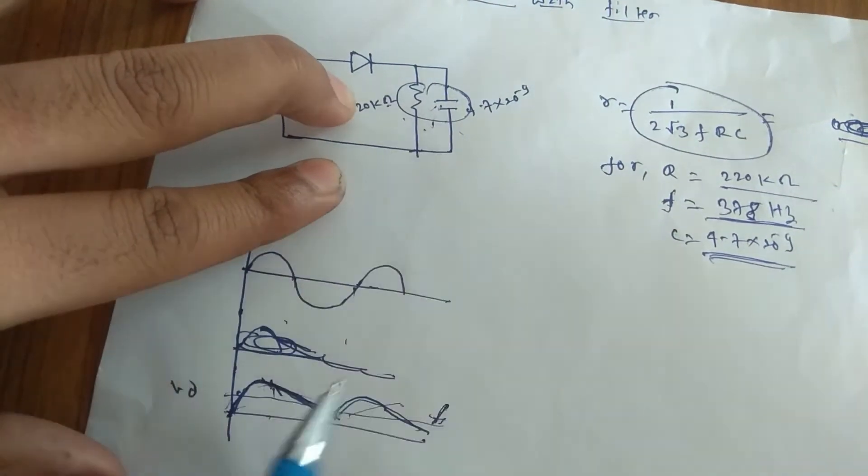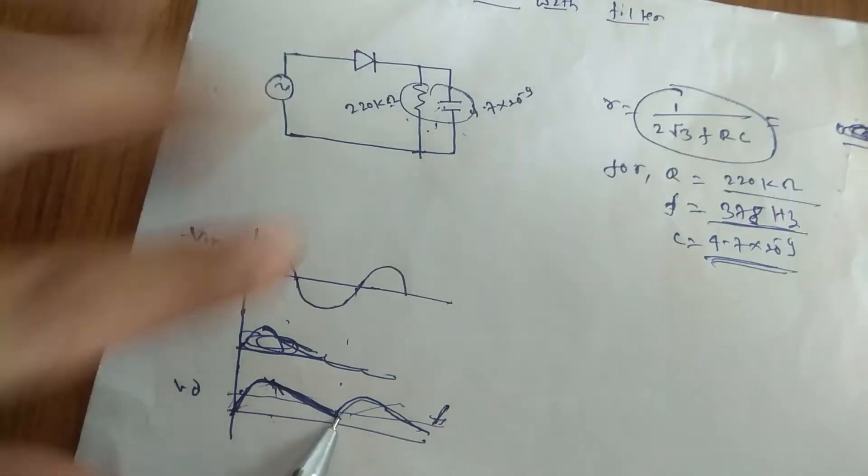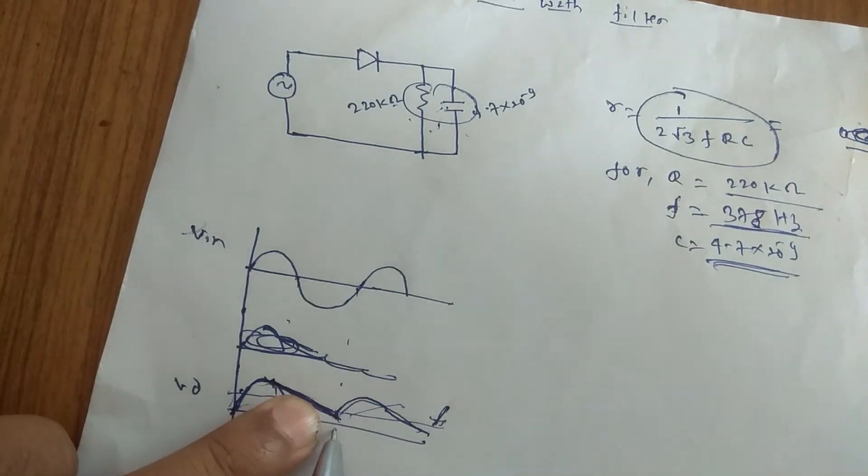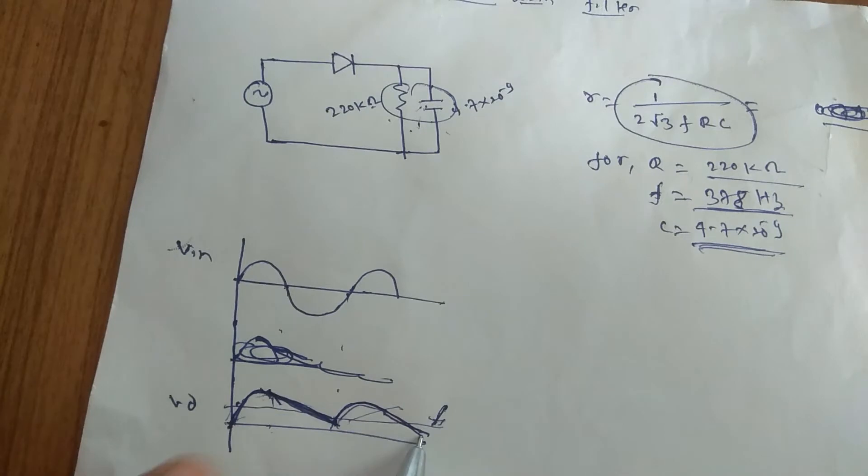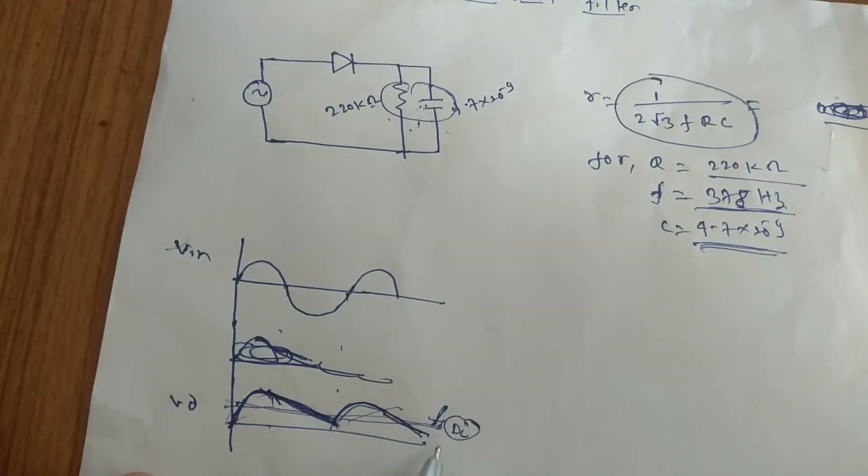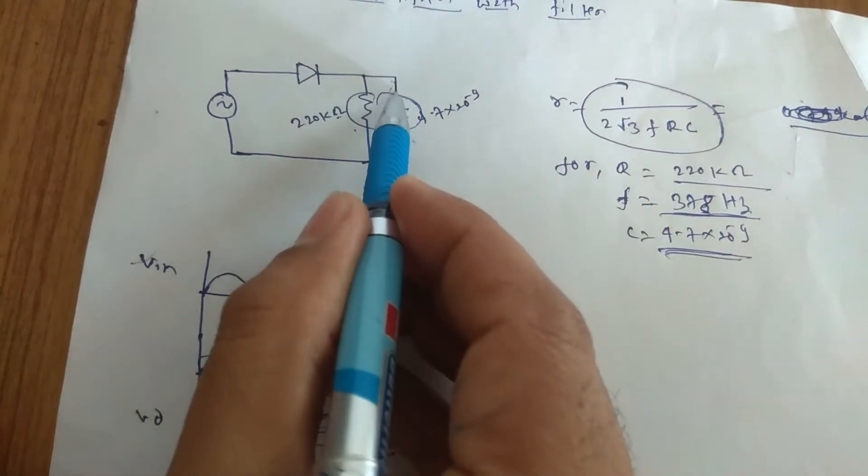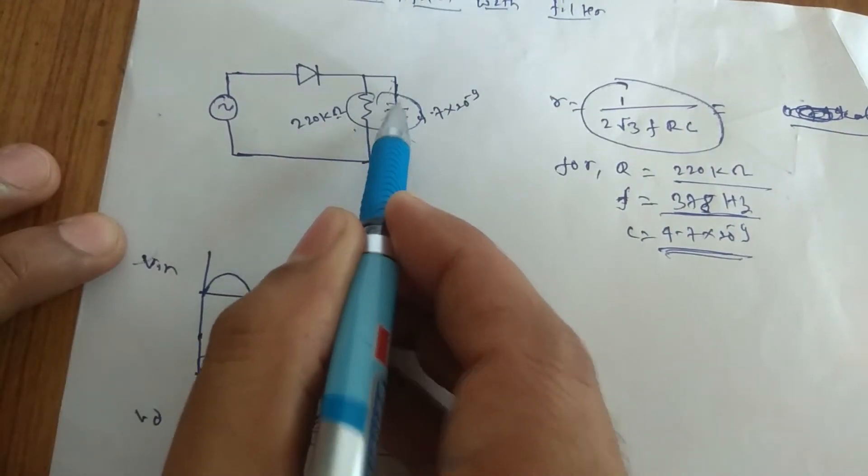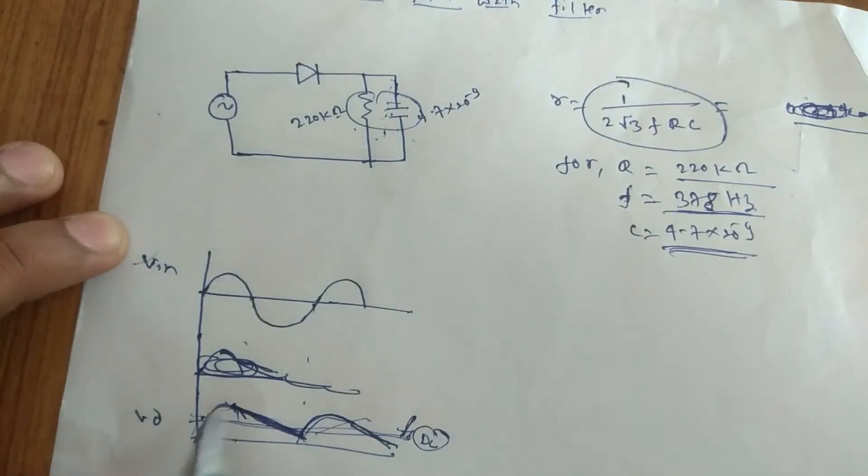time delay is more and it will take much time to discharge. Again when positive peak is coming, it will be like this. It will try to match with the DC. Actually we wanted a DC, that is why we are giving capacitor in parallel of load, so that we can get DC.